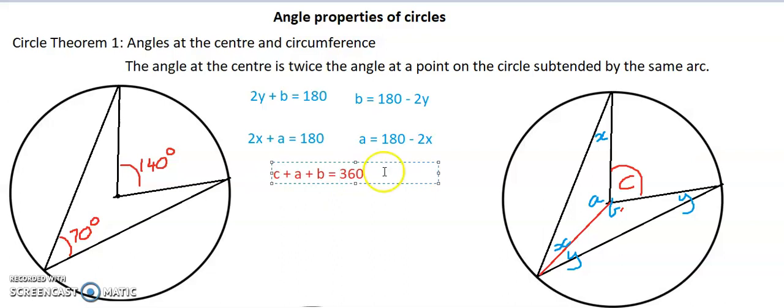Which means I can go, if I want to find c, I'm going to start off with 360 and I'm going to take away a and take away b. So that's the case. My a is 180 - 2x. I'm putting it in brackets so that way I apply that takeaway sign to everything inside the brackets. Likewise with me taking away b, which is 180 - 2y.